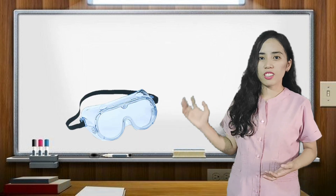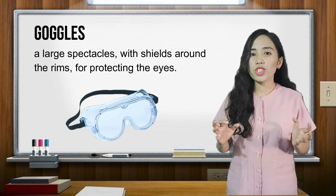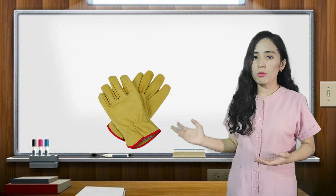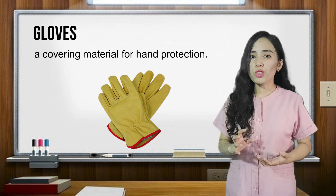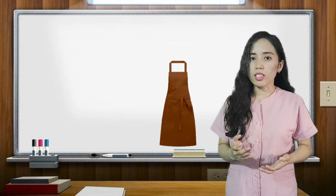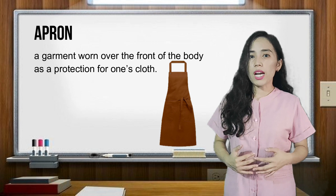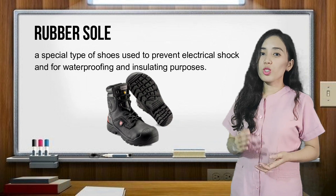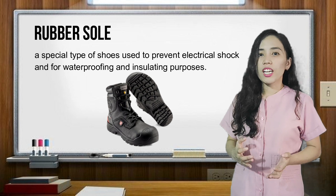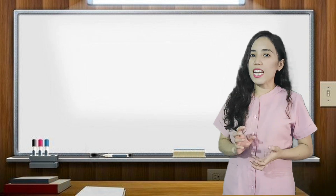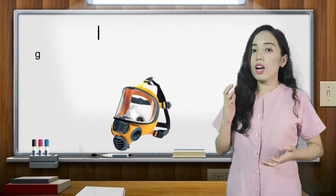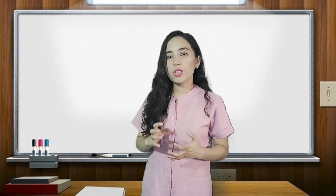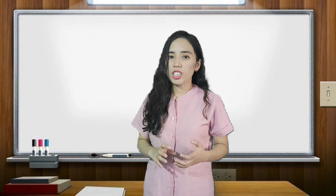First, we have goggles — large spectacles with shields around the rim used for protecting our eyes. Next, we have gloves, a covering material used for hand protection. We also have the apron, a garment worn over the body to protect our clothes. Next, we have rubber-soled shoes, a special type of shoe used to prevent electrical shocks and for waterproofing and insulating purposes. And last, we have the face mask, a covering for the face to prevent inhaling and absorbing dust and other chemicals. Those are some of the PPEs we use in the computer workplace.